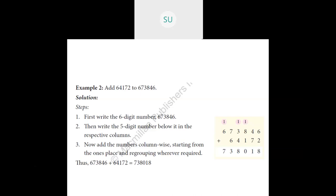Now add the numbers column wise. In the 1s place, 6 plus 2 is 8. Then 7 plus 4 is 11, so write 1 and carry over 1. Then 8 plus 1 is 9, plus the carried 1 gives 10 — write 0 and carry over 1 to the 1000s place. So 1 plus 3 is 4, and 4 plus 4 is 8 — write 8. In the 10,000s place, 7 plus 6 is 13 — write 3 and carry over 1 to the lakhs place. In the lakhs place, 1 plus 6 is 7, and the second number doesn't have a lakhs digit so that is 0. So the answer is 7,38,018.